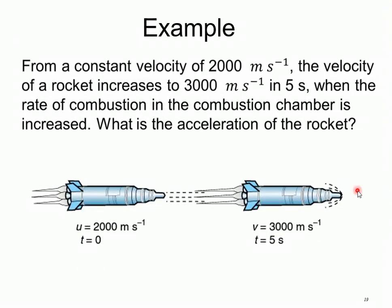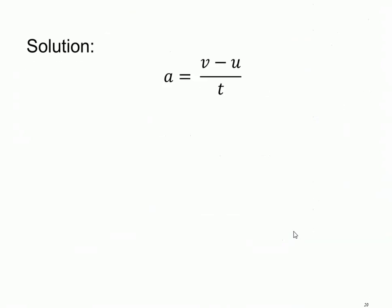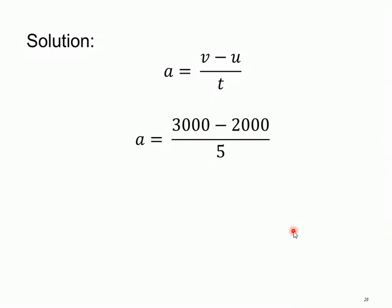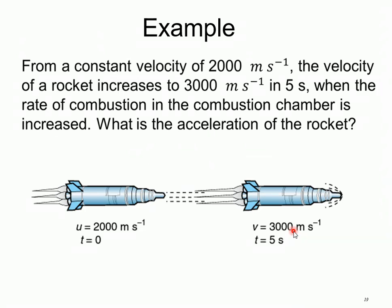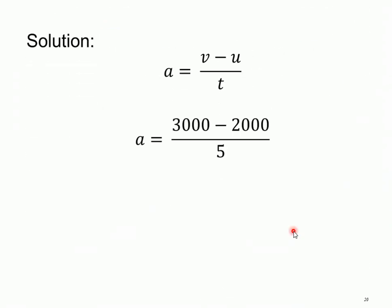Example: from a constant velocity of 2000 meter per second, the velocity of a rocket increases to 3000 meter per second in 5 seconds when the rate of combustion in the combustion chamber is increased. What is the acceleration of the rocket? Given: u equals 2000 m/s at t equals 0, and after 5 seconds v equals 3000 m/s. Using a equals v minus u over t: that is 3000 minus 2000 divided by 5, which gives 200 meter per second squared.